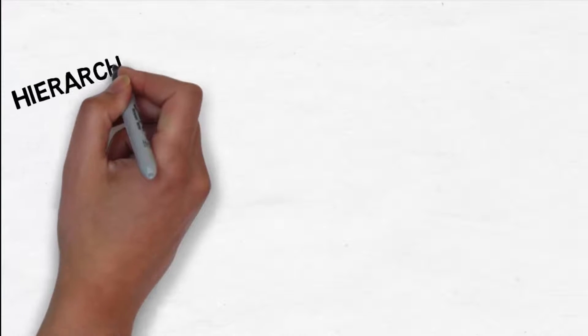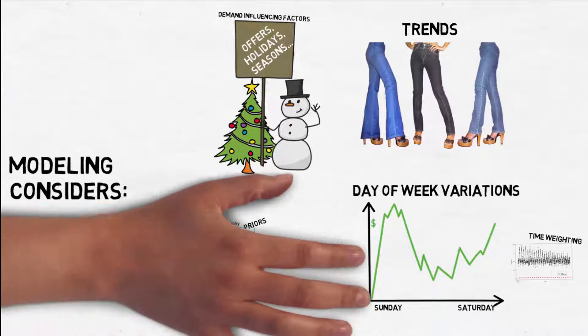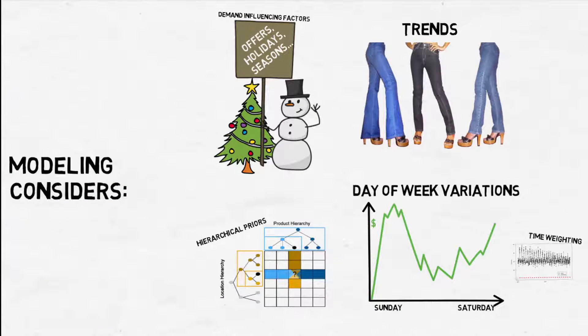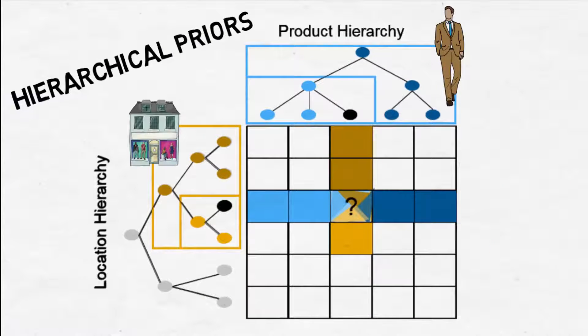Okay, so now let's talk about hierarchical priors. Hierarchical priors allow you to enhance the modeling of some products that simply just don't have enough historical data or promotional data in history. Examples are new life cycle products or fashion products. And when we talk about hierarchy, there is the product hierarchy where a product in a specific location inherits values from other products in the same location.